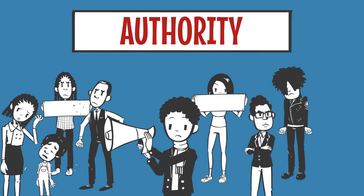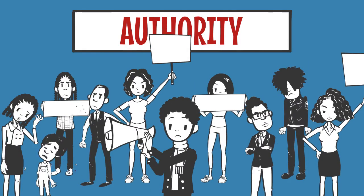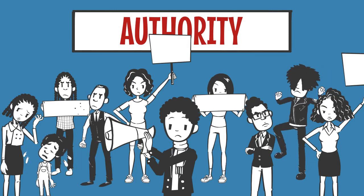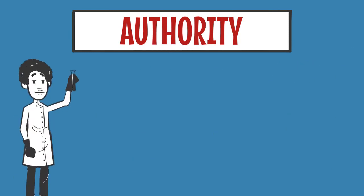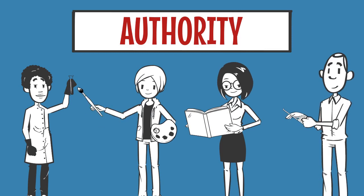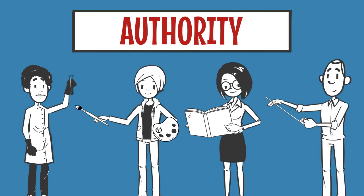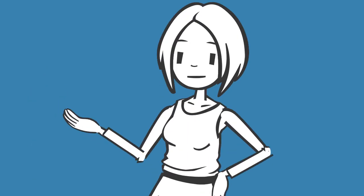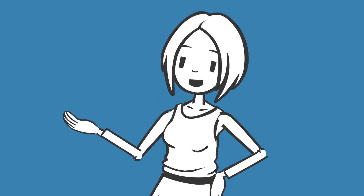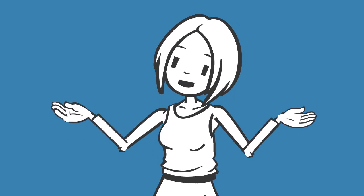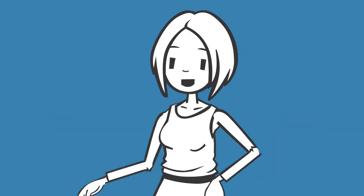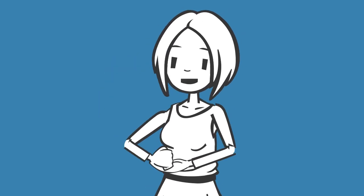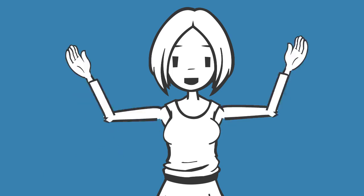Similarly, people who are heavily involved in social movements like activists could be authorities on the related social issues. Academic disciplines vary widely on the types of authority they value. Check your assignment guidelines or ask your instructor if you're not sure which types of authority are appropriate to include. The author's background and credentials are important, but they're not the only factors that determine an information source's authority. The context in which you will use the information is just as, if not more, important.